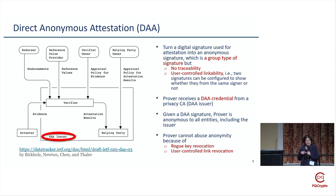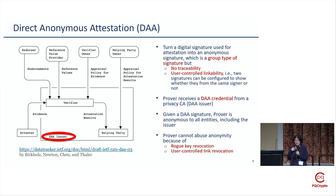To change traceability, we introduced a property called user-controlled linkability. That means if the attester and verifier have an agreement — the verifier says: I don't need to know who you are, but I do want to know every time you come to me for business, that you're coming back. So if we agree, I give you a base name; you always use my base name and send me an anonymous signature, and I know you're coming back without knowing your name or address.